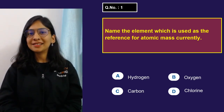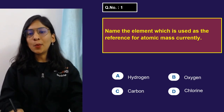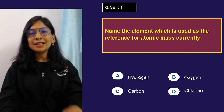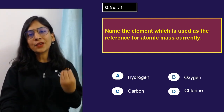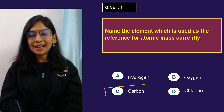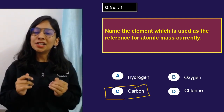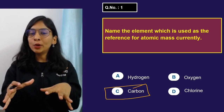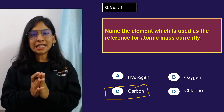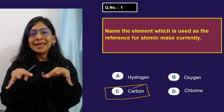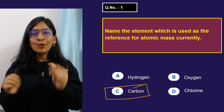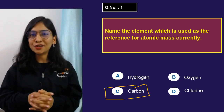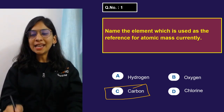Question number one: name the element used as a reference for atomic mass currently. We started with hydrogen as a reference, then moved to oxygen, but nowadays we take carbon as the reference. Let's have a competition — try to respond in the comment section and see who is faster, you or ma'am.